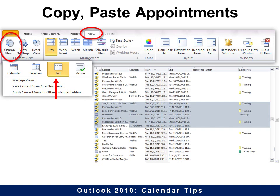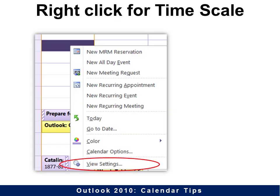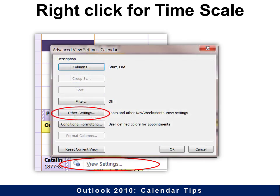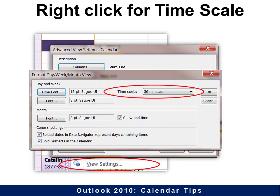You can copy them by right-clicking and choosing copy, then paste into a different calendar. You can also right-click to find View Settings — you'll also see this under View. In View Settings you can set other options; for example, time scale. By default it is set at 30 minutes, but you can change that if you need more detail — for example, you can set it to 15-minute increments so you can see more information.